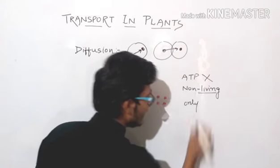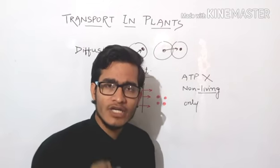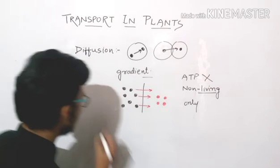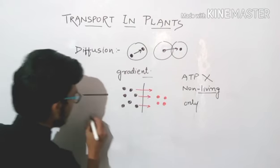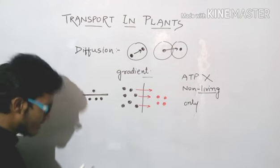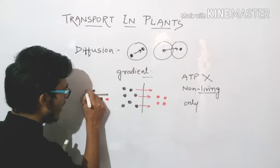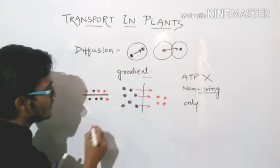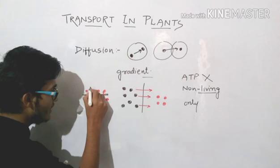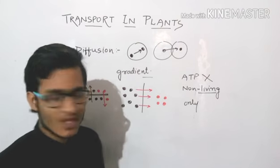Diffusion is quite important because it is the only method of gaseous exchange in plants. When CO₂ accumulates in a plant, it goes outside, and oxygen comes inside, based on the gradient. For example, across a membrane, one solute (shown in red) has high concentration on one side and low on the other, so it moves in one direction, while another solute (shown in black) moves in the opposite direction.